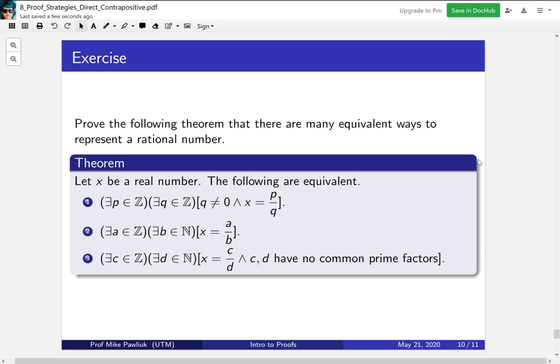As an exercise for you, prove the following theorem that there are many equivalent ways to represent a rational number. So the theorem is, let X be a real number, the following are equivalent. The first statement is, there is an integer P and an integer Q such that Q is not 0 and X is P over Q. The second statement is, there is an integer A and a natural number B such that X is A over B. The third statement is, there exists an integer C and there is a natural number D such that X is C over D and C and D have no common prime factors. These are three equivalent ways of defining a rational number.